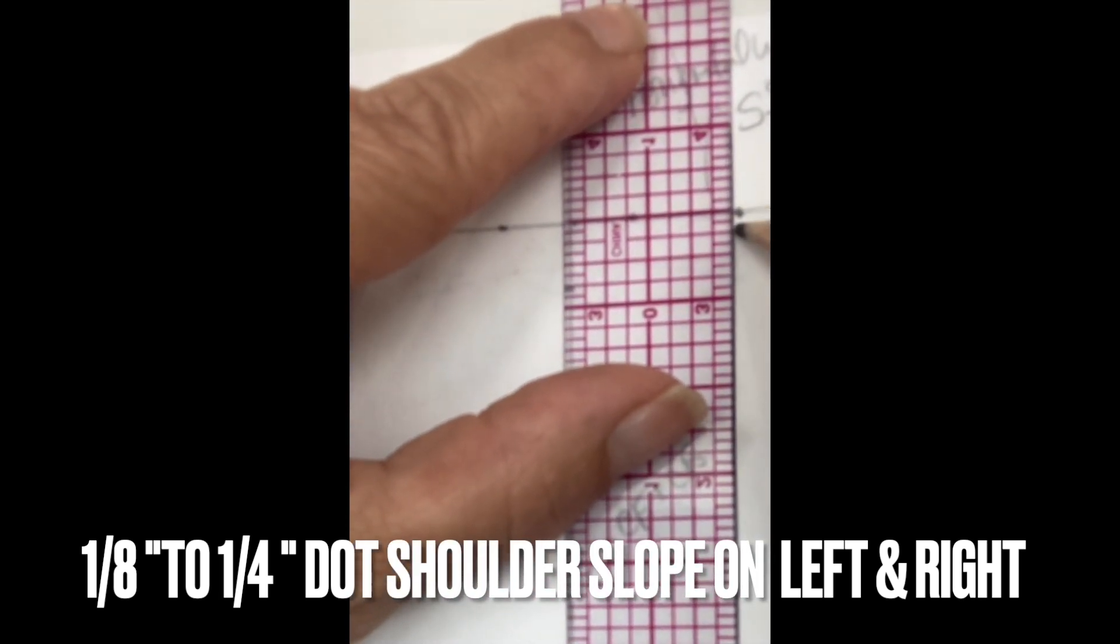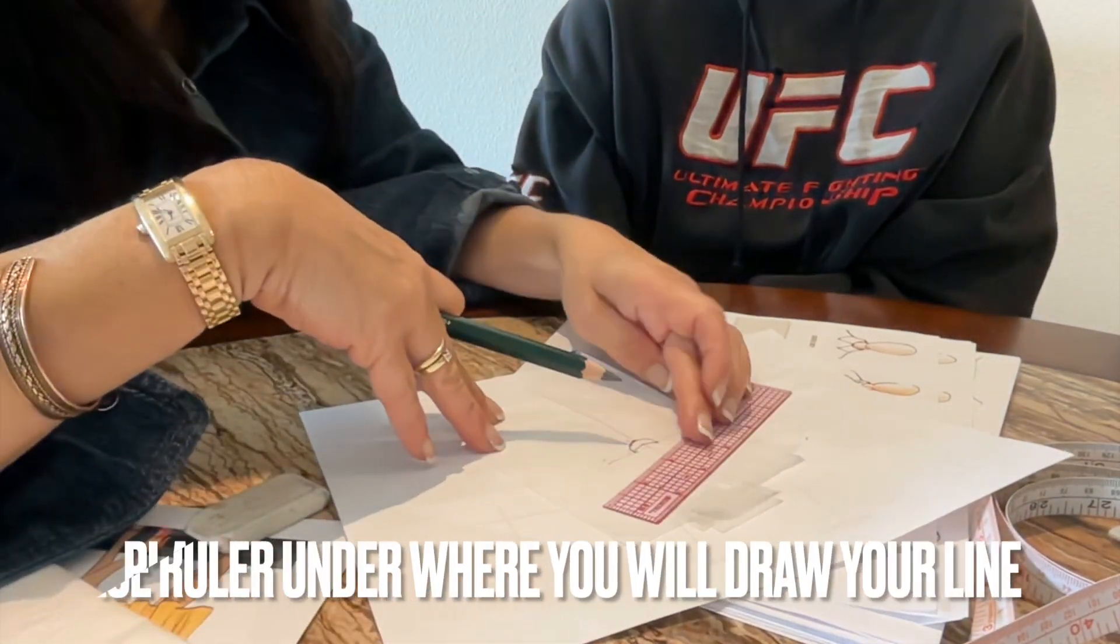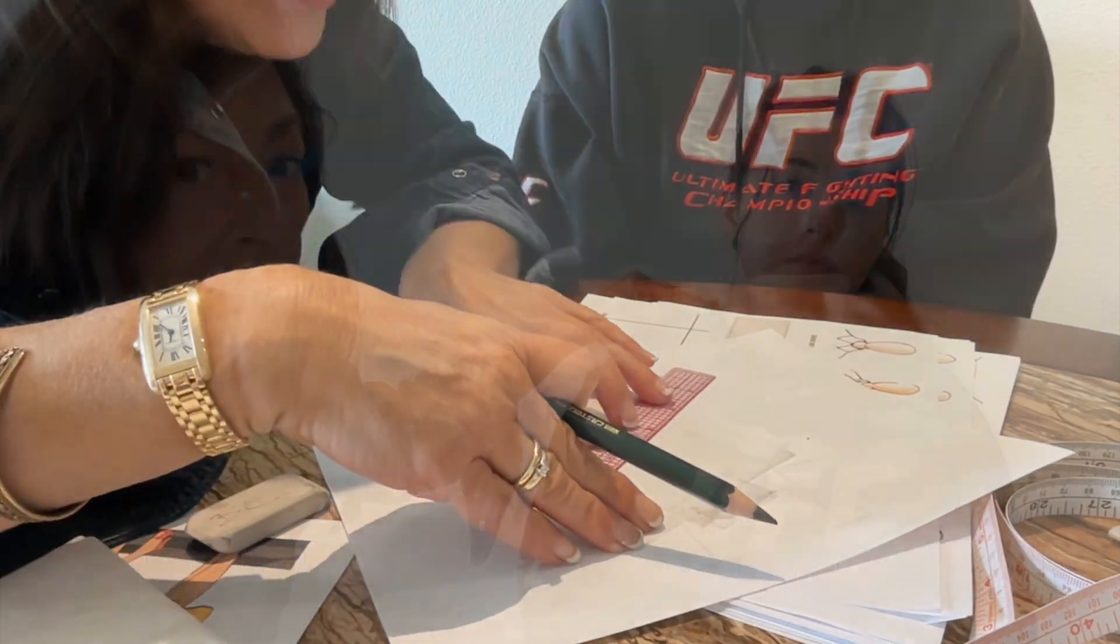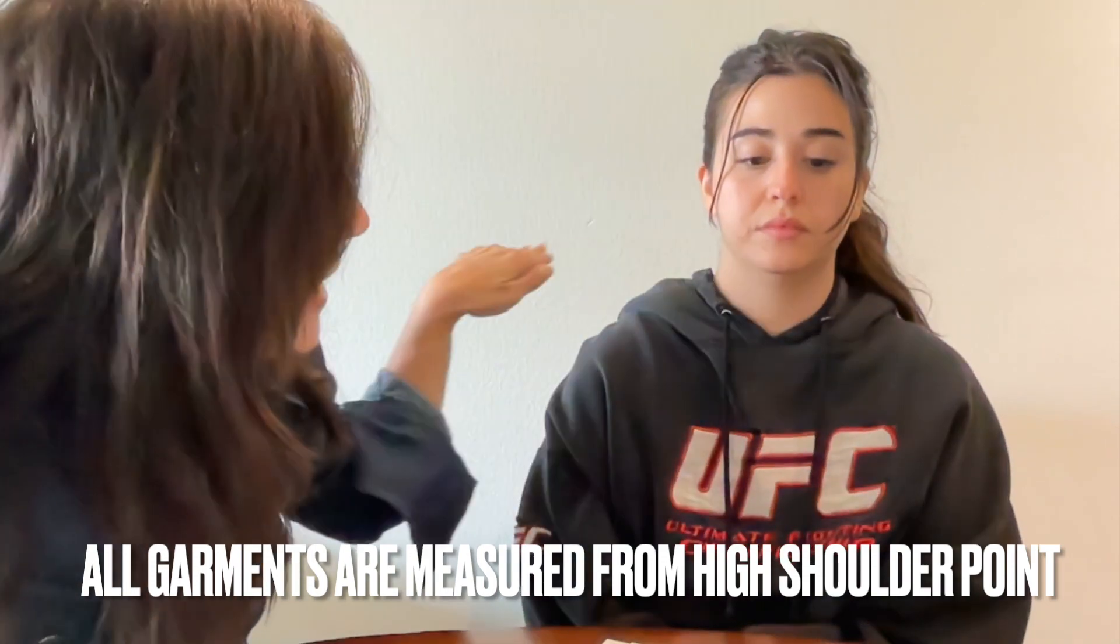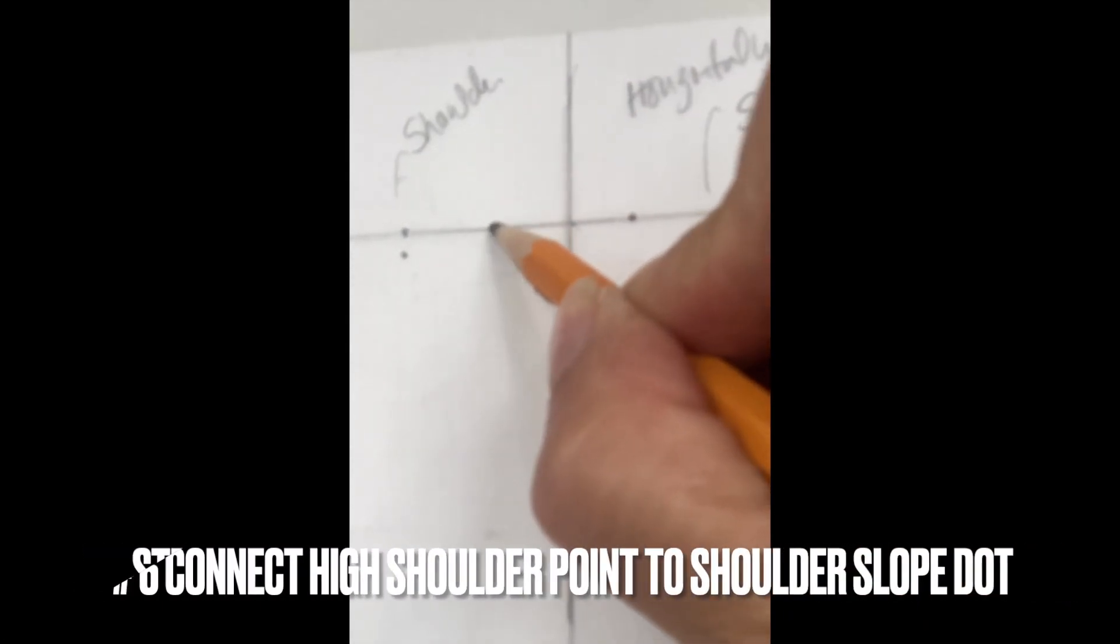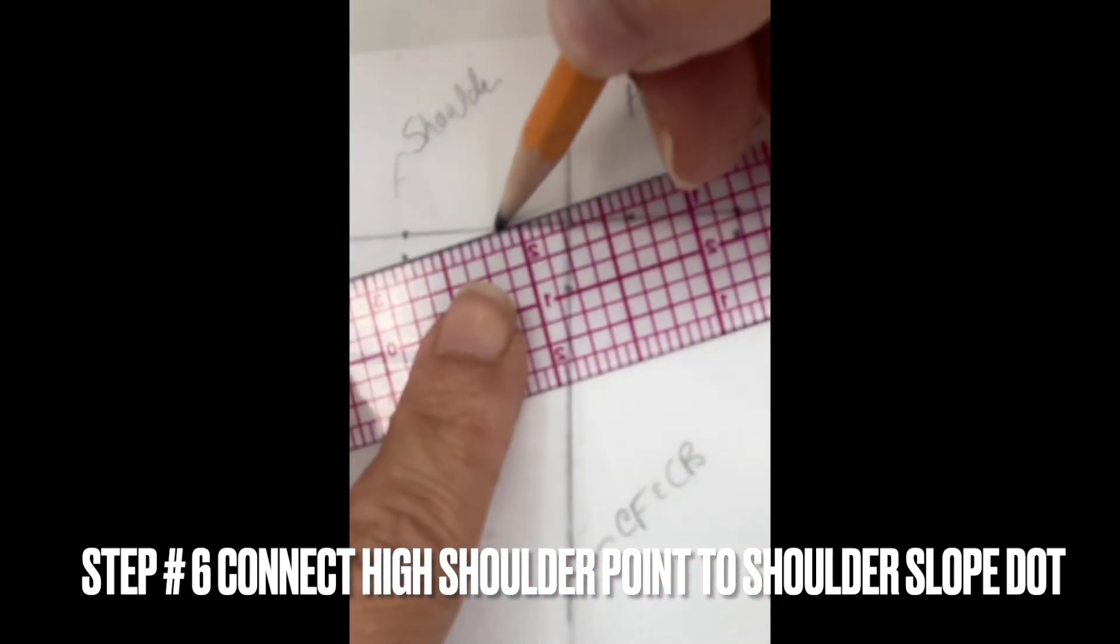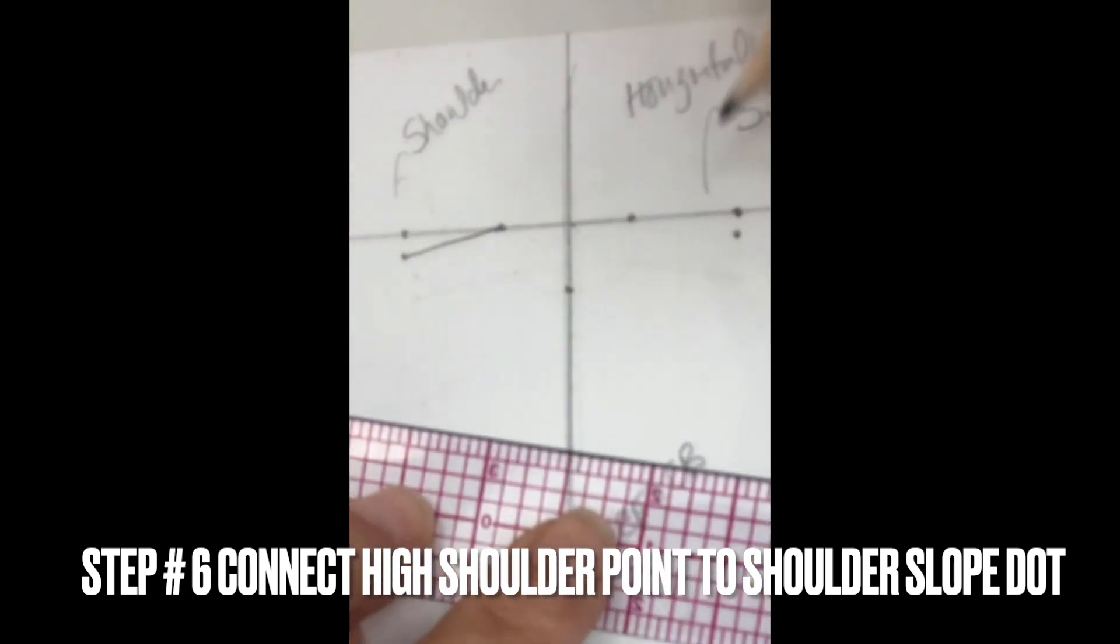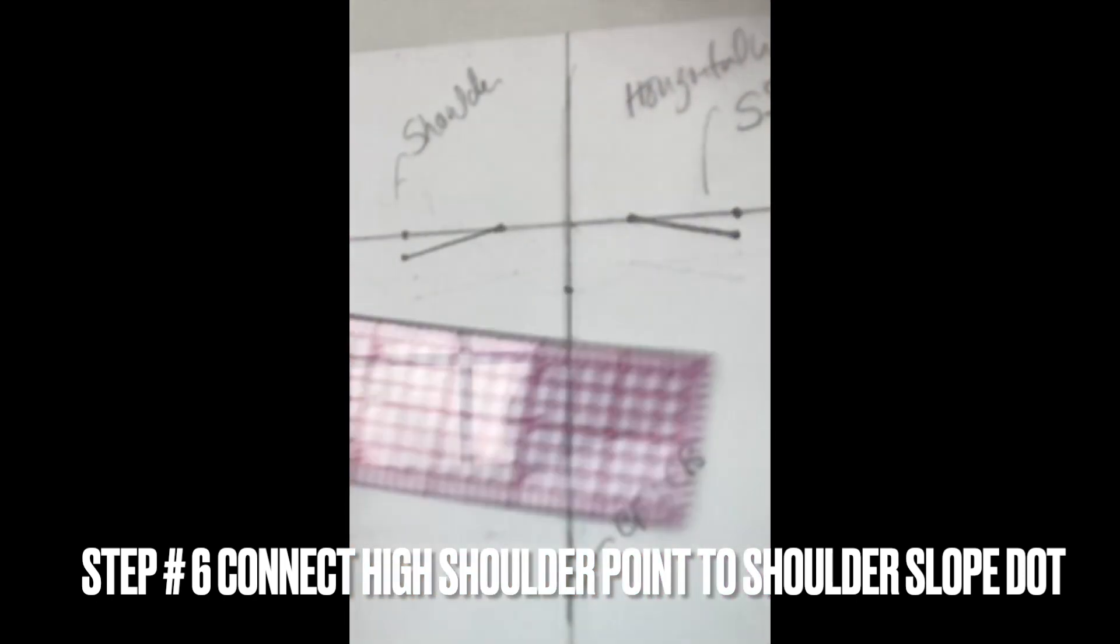And then line it up with the dot shoulder dot. Do one-eighth inch down from the other dot. Everybody, I've noticed to my students, they like to put the ruler at the top. Always have the ruler down. There's your high shoulder point. That's the only point that connects on that T line. Now your shoulder connects from your high shoulder point, which is this, and it matches up with your shoulder slope. So let's draw our line in both sides. And there you go.